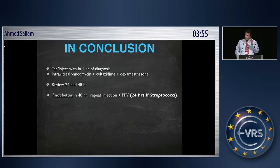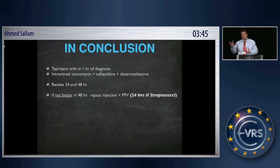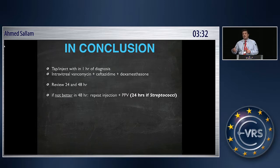It's important to stop at 'getting better.' Things are not going to disappear completely in 48 hours, but you need a signal that the eye is improving — less pain, less AC reaction, less vitreous haze. Once you have that signal, the eye is sterile. You don't need to inject anymore; it will take time to settle, and you may later do an elective vitrectomy for vitreous opacities.